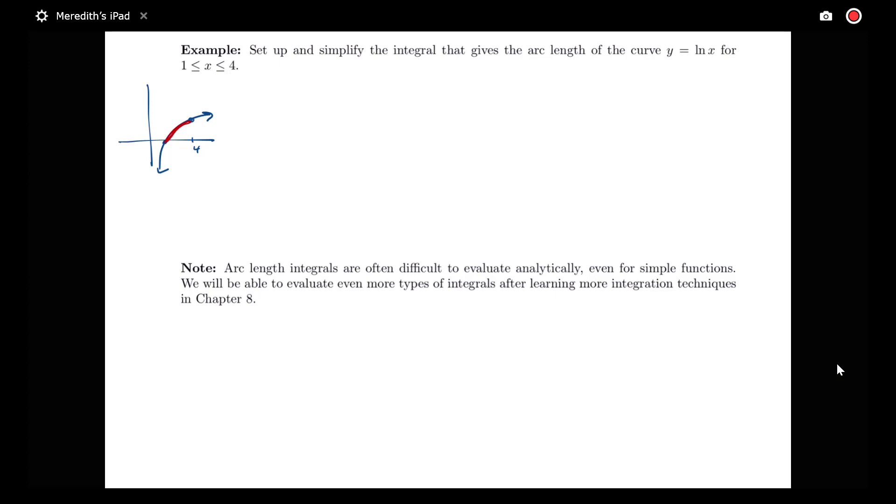We know that our arc length formula involves doing an integral over our interval from 1 to 4 of the square root of 1 plus the derivative of our function squared. So notice that y prime here, the derivative of the log function, is 1 over x. So when I have my derivative squared, I'm going to have 1 over x squared there under my square root.